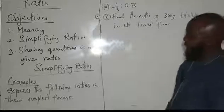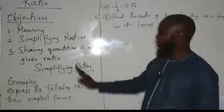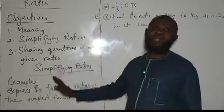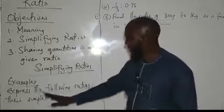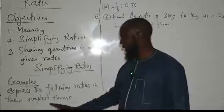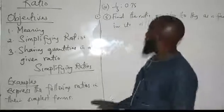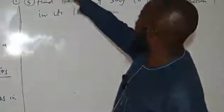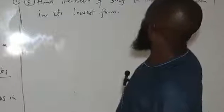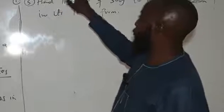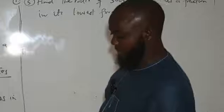These are the examples we have: simplifying ratio — express the following ratios in their simplest forms. We have: 14 to 28; 5 to 2 and 2/3; 0.5 to 15; and 1/3 to 0.25. That is example 1. Then we also have finding the ratio of 300 grams to 1 kilogram as a fraction in its lowest term, which is example 2. So let's look at the solutions one by one.